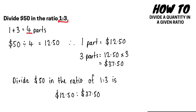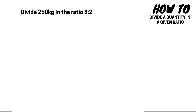We can always check our answer: if we add 12 dollars 50 to 37 dollars 50, it should always add up to our original quantity. So 12 dollars 50 plus 37 dollars 50 is equal to 50 dollars.